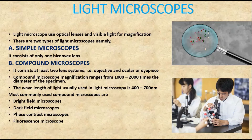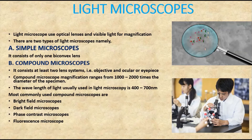The magnification power achievable by the compound microscope is nearly 1,000 to 2,000 times the diameter of the specimen. The wavelength of light generally used in the light microscope is 400 to 700 nanometers. A wide variety of microscopes are now available, including bright field, dark field, phase contrast, and fluorescent microscopes.